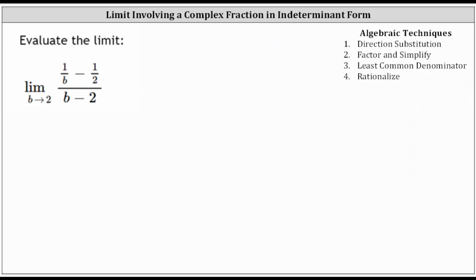We can often perform algebraic techniques to change the form of the function so that we can find the limit by performing direct substitution. In this case, the only thing we could possibly do to simplify the complex fraction is to subtract the fractions in the numerator. This falls into case three, where we find the least common denominator. I'll show two ways to simplify this complex fraction.